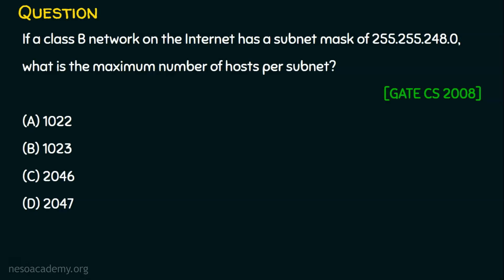Before going into the solution, we need to understand how this subnet mask is achieved. This is a classless subnet mask — but from which class was it derived? It is given in the question: it was originally a class B network, but it is now using a classless subnet mask. We need this information because we need to figure out how many octets are affected with the bit modifications.